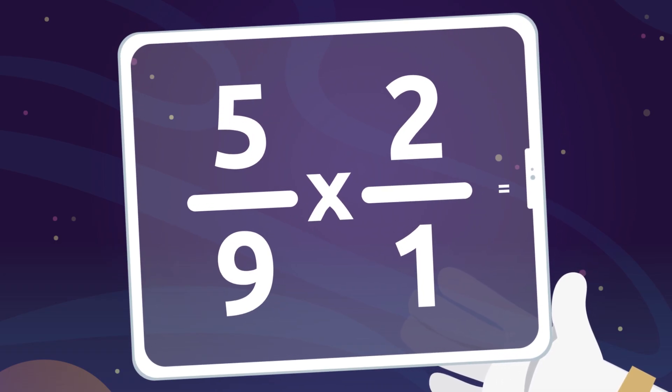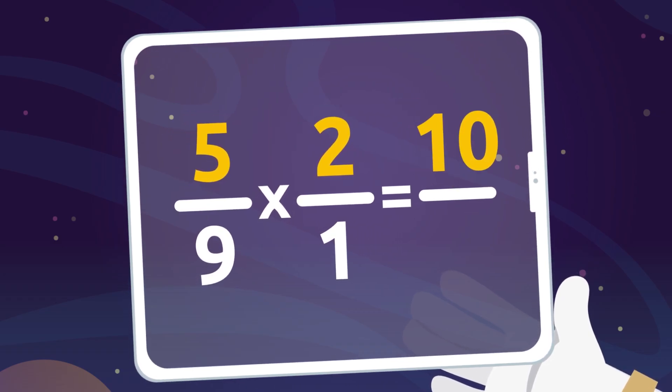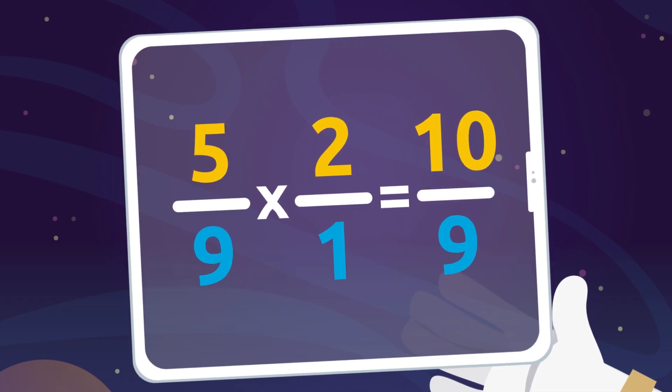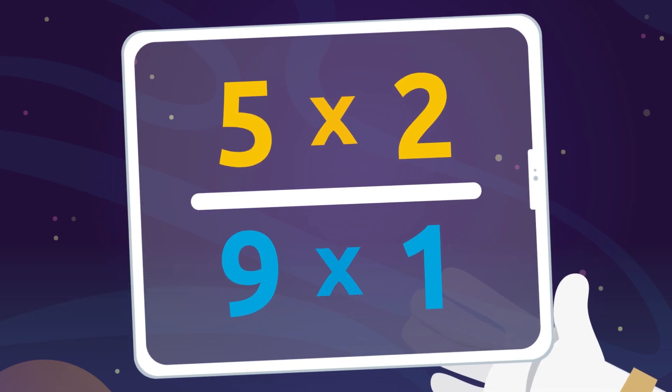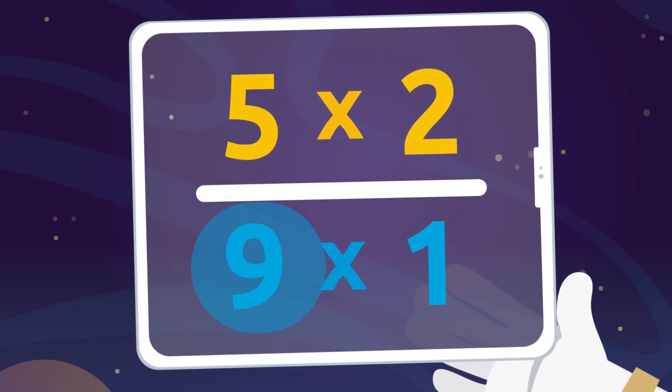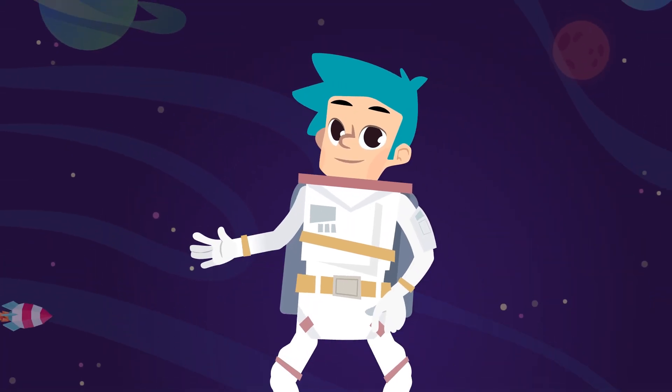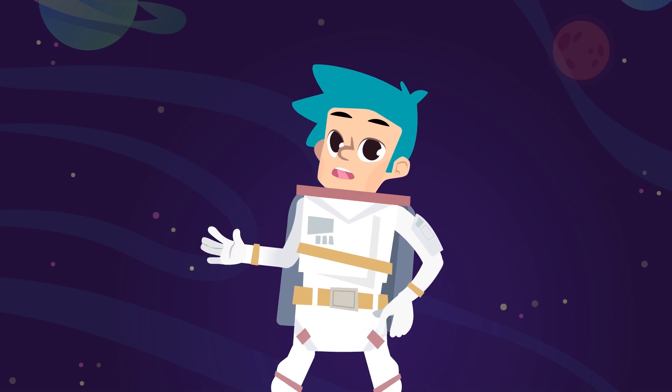Do you know how to multiply fractions? It's really easy. Pay close attention. To find the numerator, we multiply the numerators, and to find the denominator, we multiply the denominators. This means that to multiply fractions, we multiply the two numerators together and the two denominators together. Easy, right? Told you!